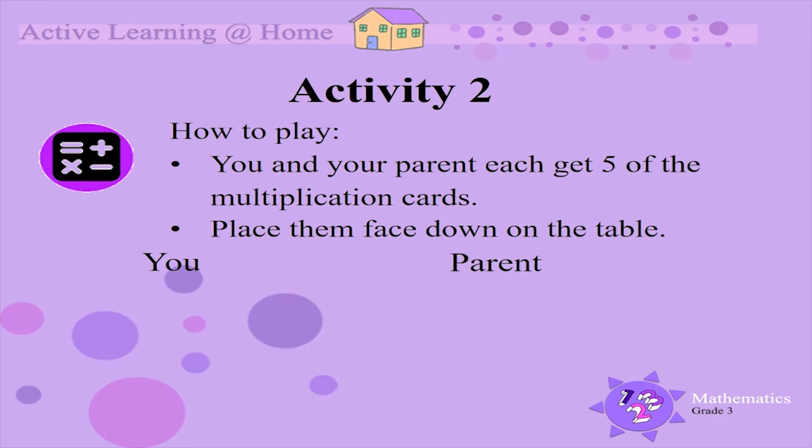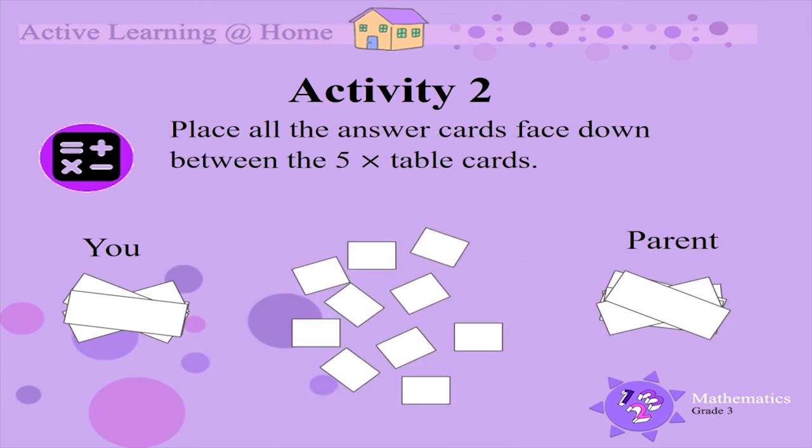Now we are ready to play. You and your parent must each get 5 of the multiplication cards. Place them face down on the table. Next, we place all the answer cards face down between the 5x table cards.